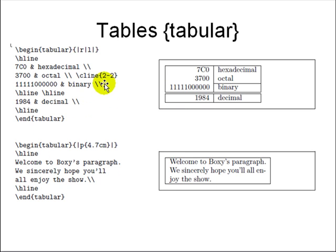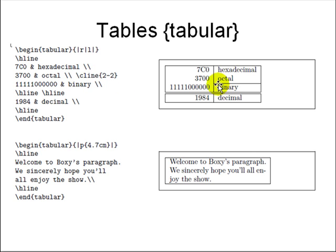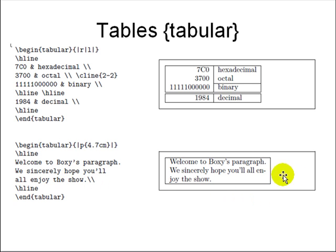To generate a table, you say begin tabular, end tabular. You can use vertical bars to indicate column separators and specify right-align or left-align for columns. hline draws a horizontal line. Ampersand means next column, and backslash backslash means a new line. You can use cline{2-2} to draw a line under specific columns. The tabular environment can also contain a paragraph of a specified width like 4.7cm, with horizontal lines before and after the paragraph text.